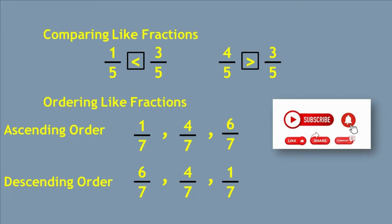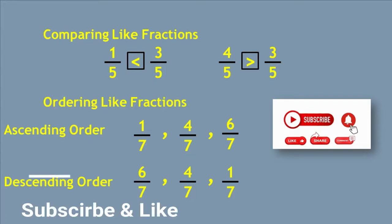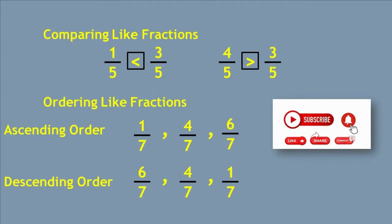Ab hum lecture ke agle part ki taraf aate hain jisme ordering like fractions hai. Jab ordering karte hain, hum isko do tarah se kar sakte hain: number one is ascending order — pehle choti fraction, phir badi; and descending order — pehle badi fraction, phir choti. Aap dekhiye, hamare saamne jo fractions hain wo same denominator ke hain, it means yeh saari like fractions hain. Ascending order mein: numerator sabse chota 1 hai, phir 4 hai, phir 6 hai — chote se bade ki taraf, yeh ascending order hai. Descending order mein: pehle 6, phir 4, phir 1. Samjhe bete?